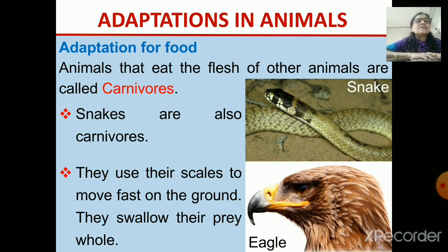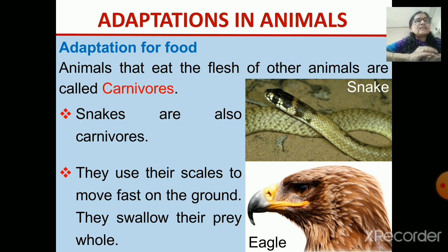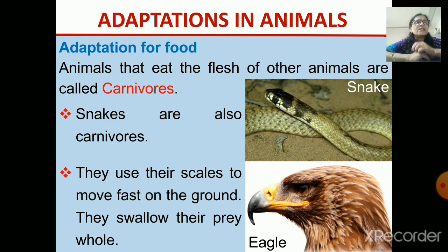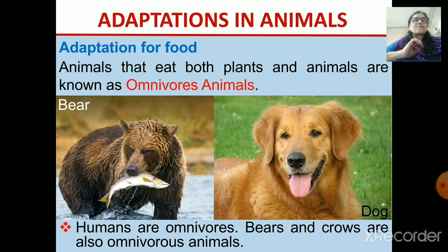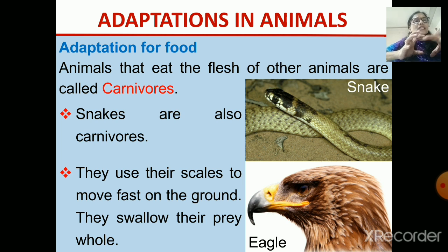Here is the picture of a carnivore snake. The snake swallows its prey whole — it does not have to tear it. It swallows its prey whole. You can also see the beak of an eagle — the shape of the beak is like a hook so that it can hold and tear the flesh of the animal. Its claws are also very sharp so that it can hold its prey.